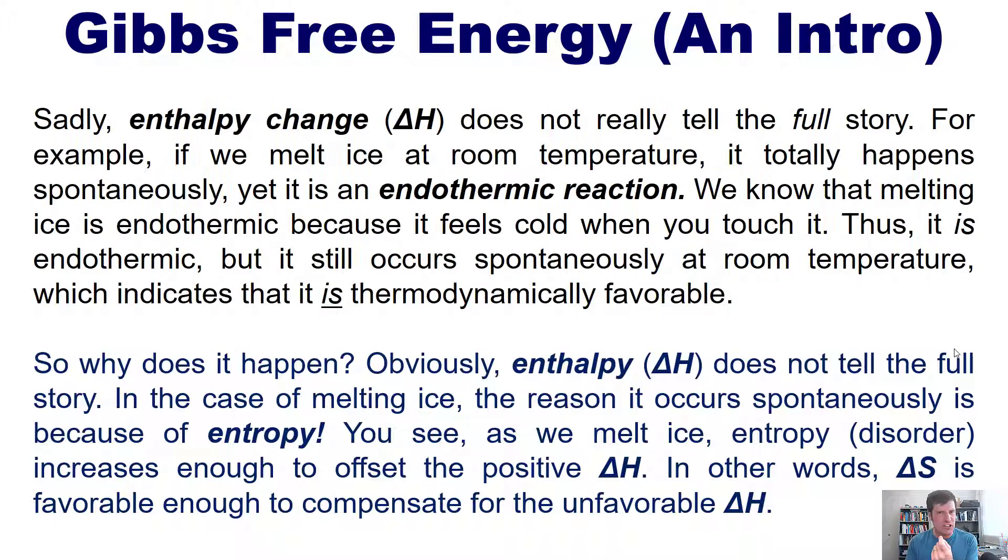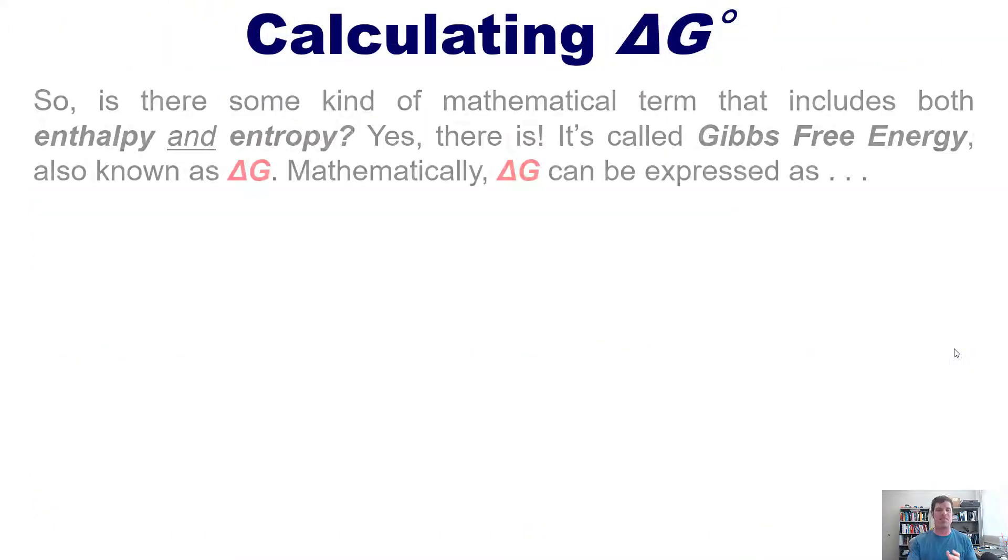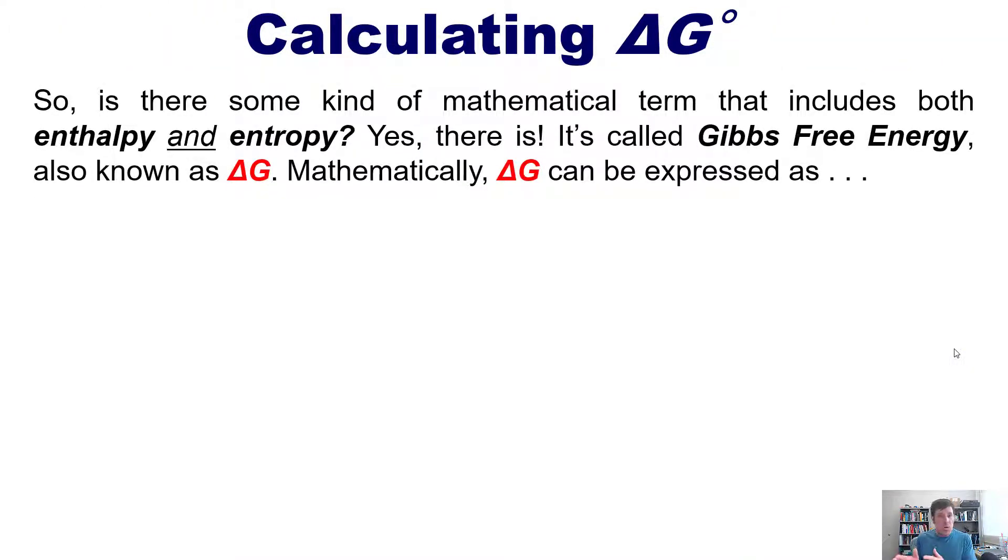Now that of course begs the question, is there some kind of mathematical term that includes both enthalpy and entropy? The answer is yes. It's called Gibbs free energy, also known as delta G.